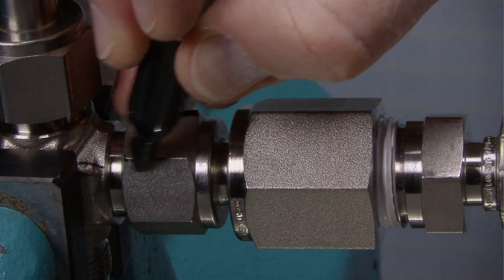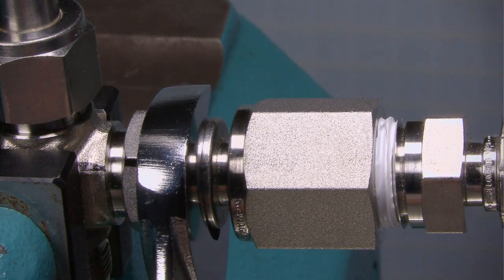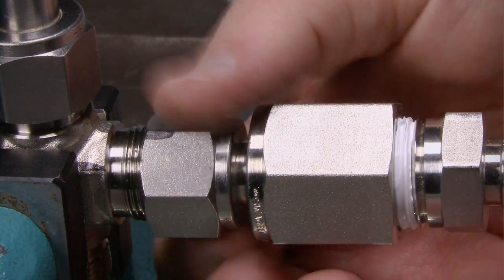Prior to disassembly, mark the tube at the back of the nut. Mark a line along the nut and fitting body flats. Use these marks to ensure that you return the nut to the previously pulled up position.